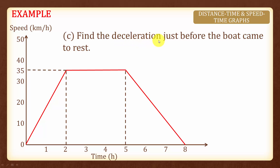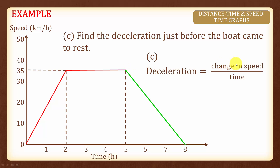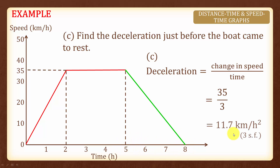Next, we are asked to find the deceleration just before the boat came to rest. The deceleration is the change in speed over time. The change in speed is 35, and the time is 3 hours. And we will have 11.7 km per square hour. Do take note of the units for acceleration. This is rounded off to 3 significant figures.